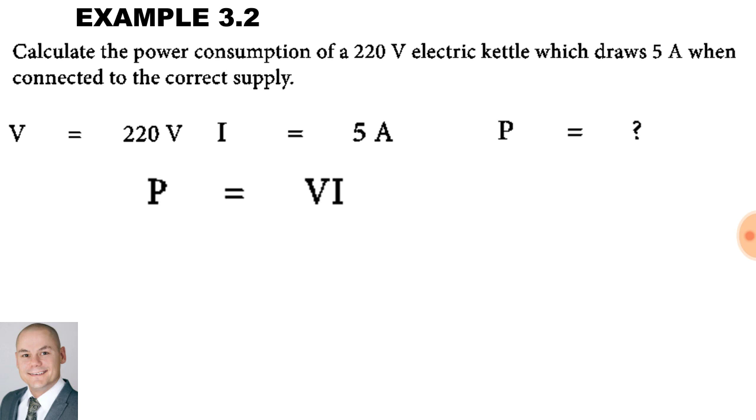To calculate power, it is V times I. The voltage is 220, current is 5 amps, and that gives us 1100 watts. Now, to simplify this further, if we divide by 1000, or we could say kilo is 10 to the exponent of 3, it means that the power is 1.1 kilowatts.